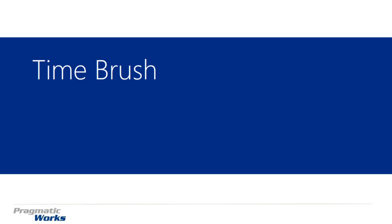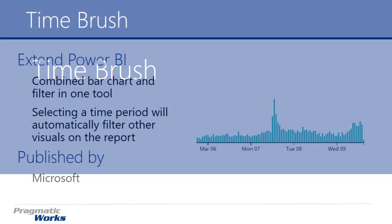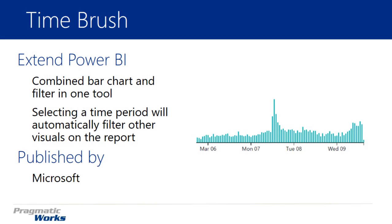Welcome back to the Power BI Custom Visuals course. In this module we're going to be looking at the Time Brush. The Time Brush is really a combination of two things - it has a graphical representation of your data in the form of a bar chart, but it's also a filter. As the name implies, you do a brushing action against the bar chart and by doing that brushing action it will filter down the other items inside your report.